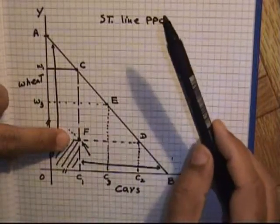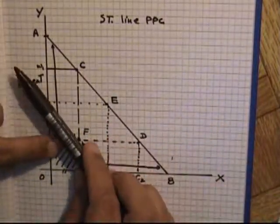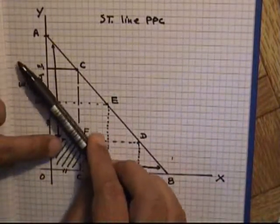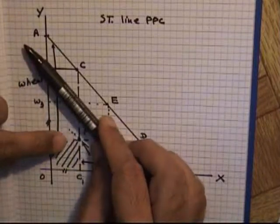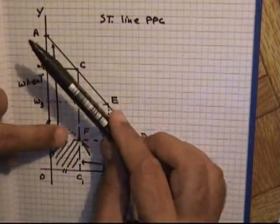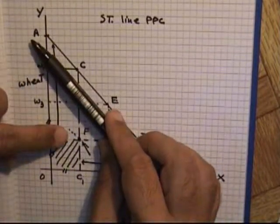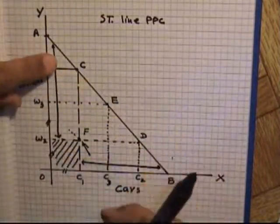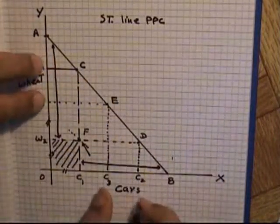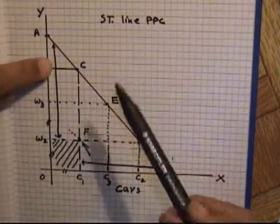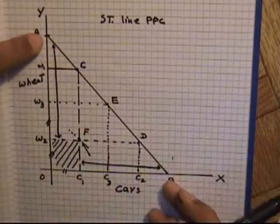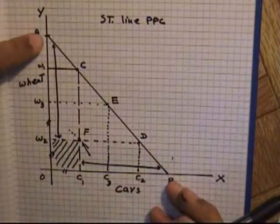Due to generating external demand, most of the population and resources in China are engaged at their potential, and the country's level of employment reaches its maximum level.